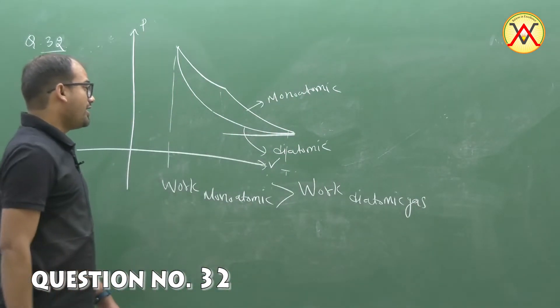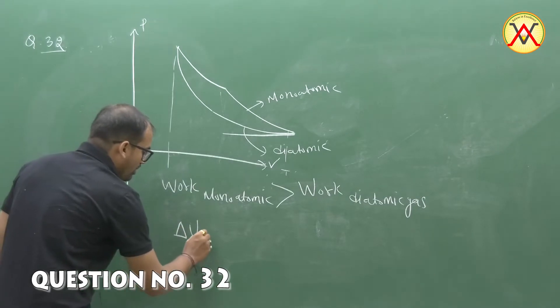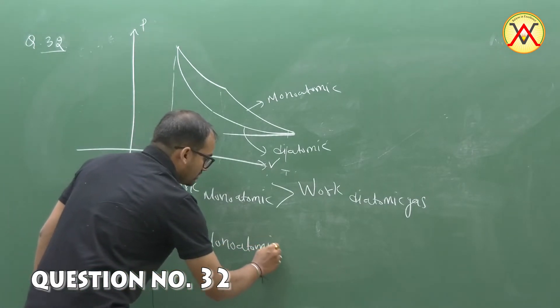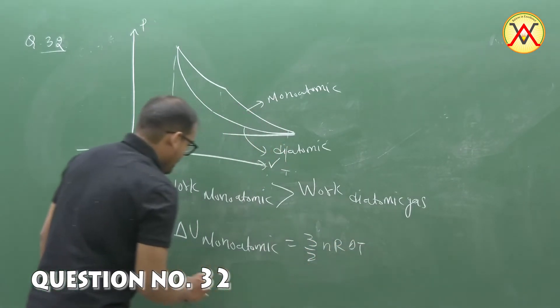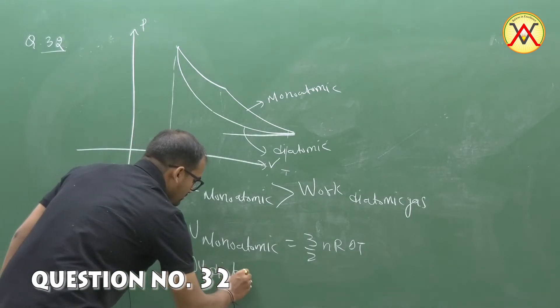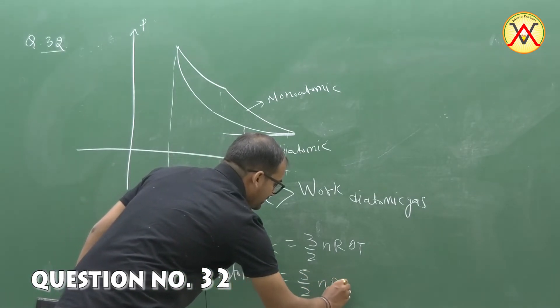And for change in internal energy, ΔU of monatomic equals 3/2 nR ΔT, and ΔU of diatomic is 5/2 nR ΔT.